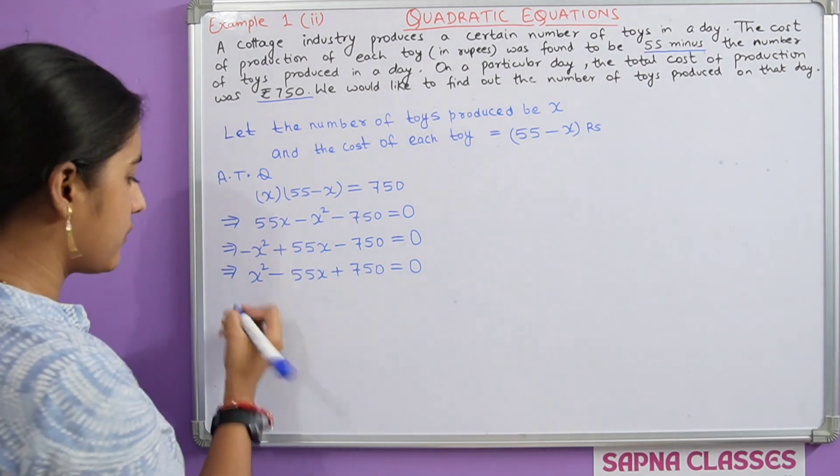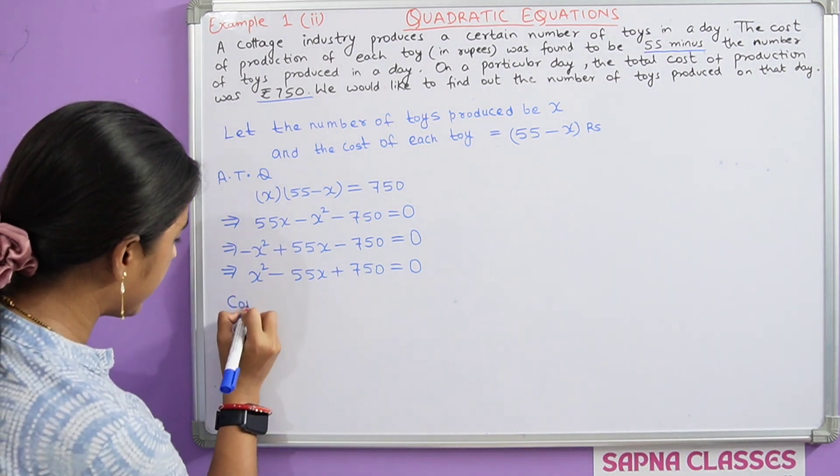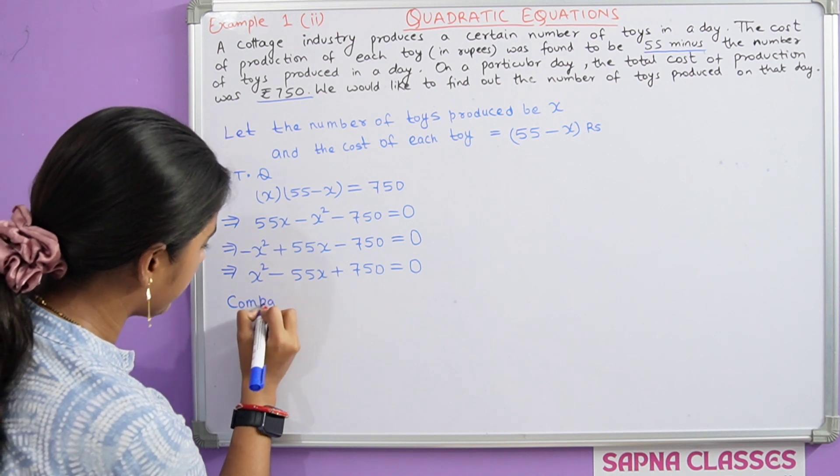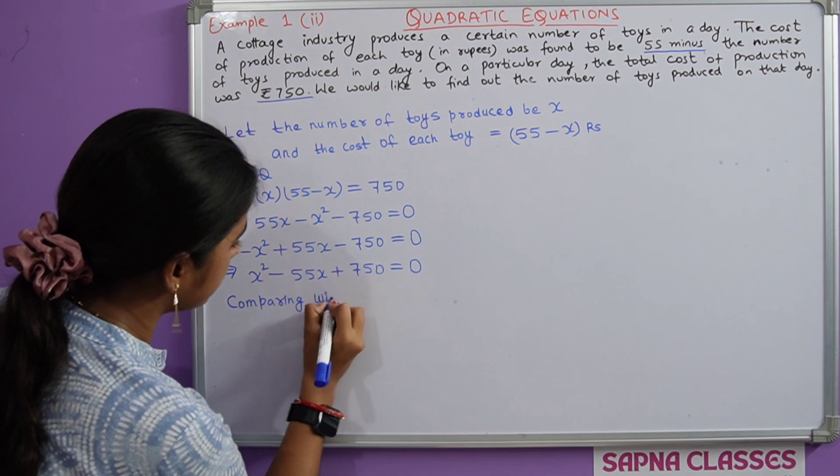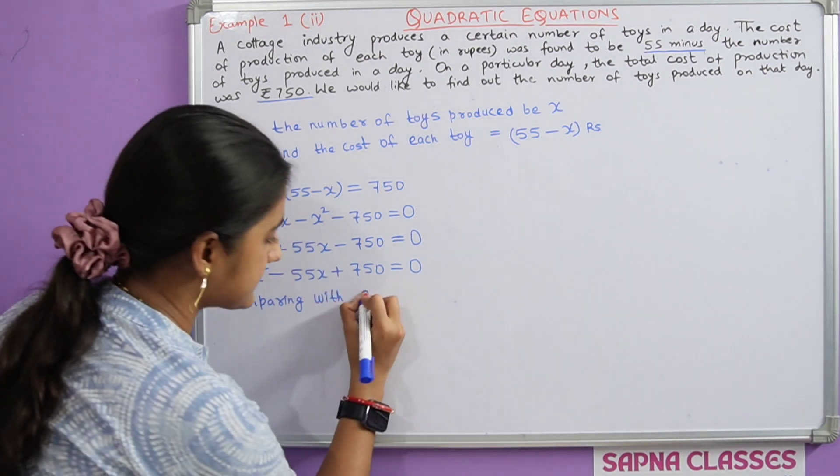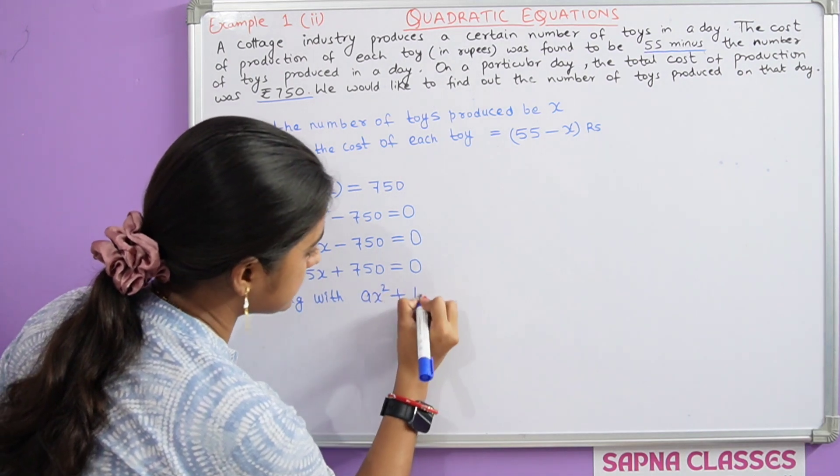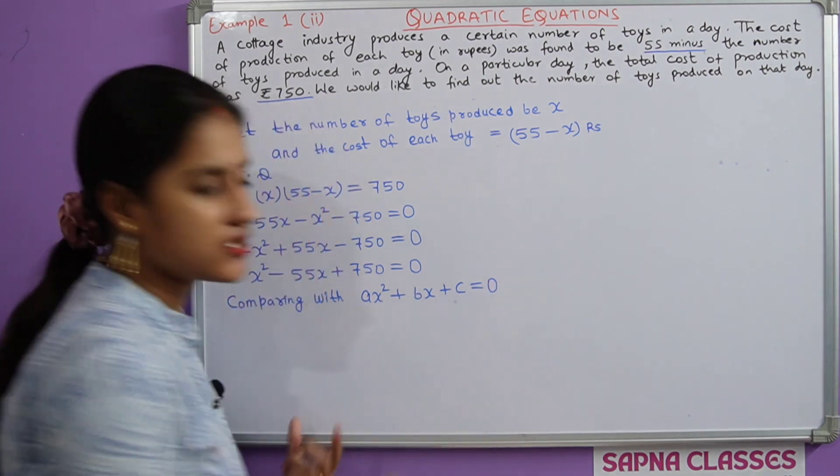Now we compare the quadratic equation of the form ax square plus bx plus c equal to 0.